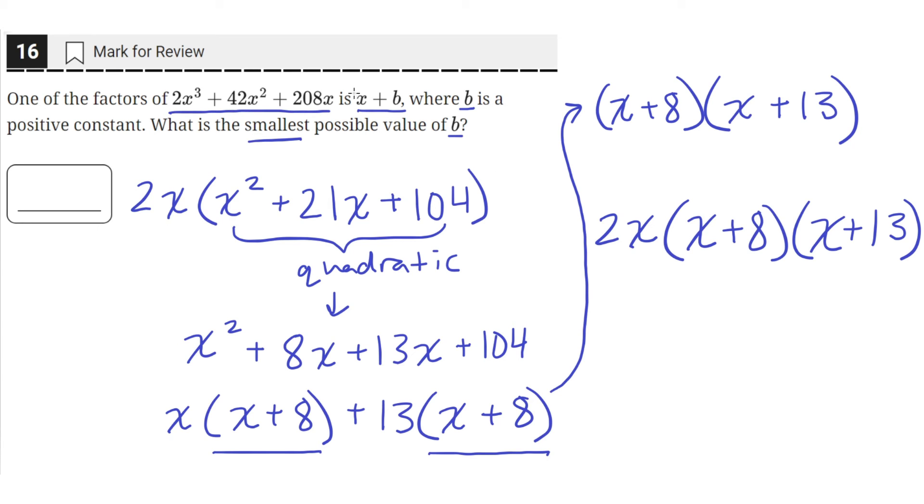Okay. And we need to find factors that are of the form x plus b. So x plus some constant. So only these two are of the form x plus some constant. Here, this is x plus 8, and this is x plus 13. This factor here is just a constant being multiplied with x. It's not of the form x plus b. So we won't consider this one.